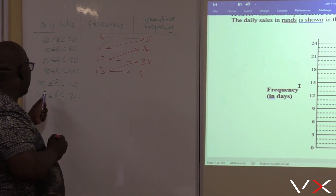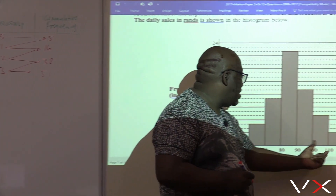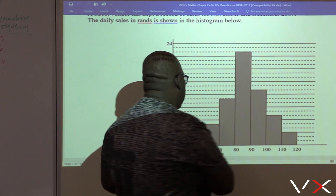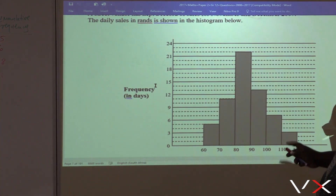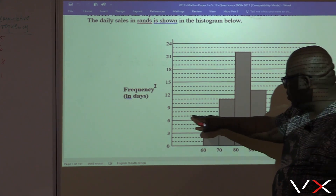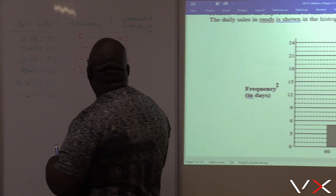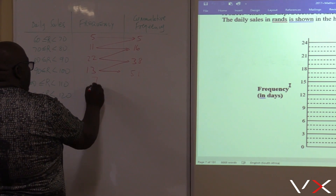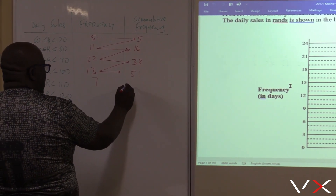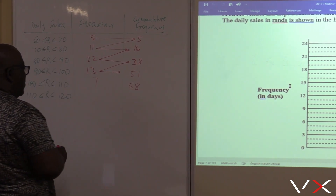Between 100 and 110 — what is the frequency there? The frequency is 7. Add this one to the previous cumulative frequency of 51: 51 plus 7 equals 58. So the cumulative frequency is 58.